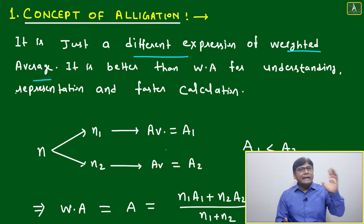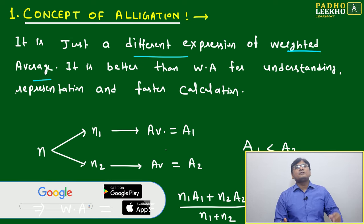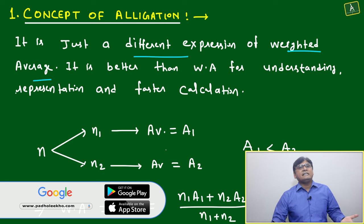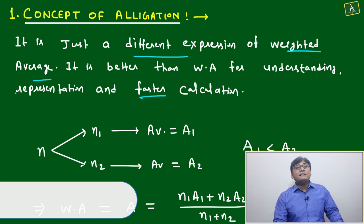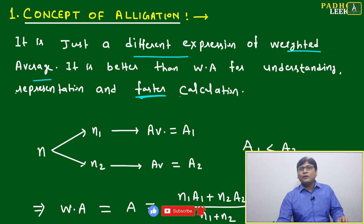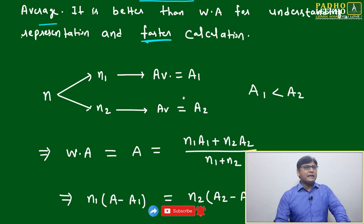Counting the ratio or taking the difference between the terms or addition will become little easy. It is better than weighted average for understanding, representation, and faster calculation. This is why we are adopting alligation.